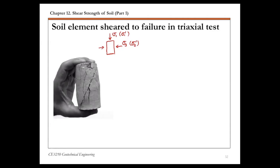Last lecture we talked about Mohr circle stress. So if you're given a soil element subjected to vertical and horizontal loading, which happen to be your major and minor principal stresses, you can draw the Mohr circle. So this is normal stress on the horizontal axis and shear stress on the vertical axis. I'm going to draw only the top half of the Mohr circle in terms of effective stress — sigma 1 prime, the major principal stress, and sigma 3 prime, the minor principal stress. This is the effective stress Mohr circle corresponding to this soil element at failure.